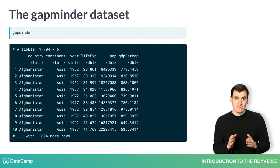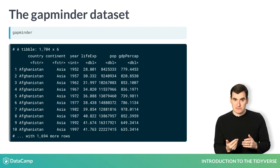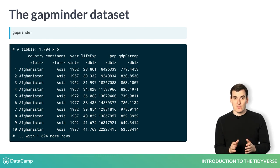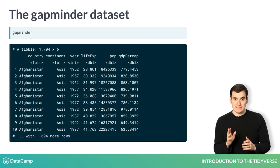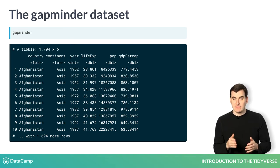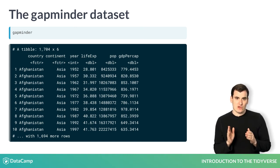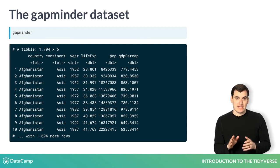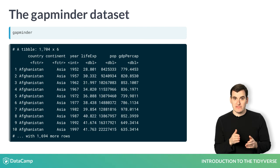For each combination of a country and year, the data set contains several variables, or columns, describing the country's demographics. We see the continent, in this case Asia, the life expectancy in years, the population, and the GDP per capita. The GDP per capita is the country's total economic output, gross domestic product, divided by its population, and it's a common measure of how wealthy a country is.